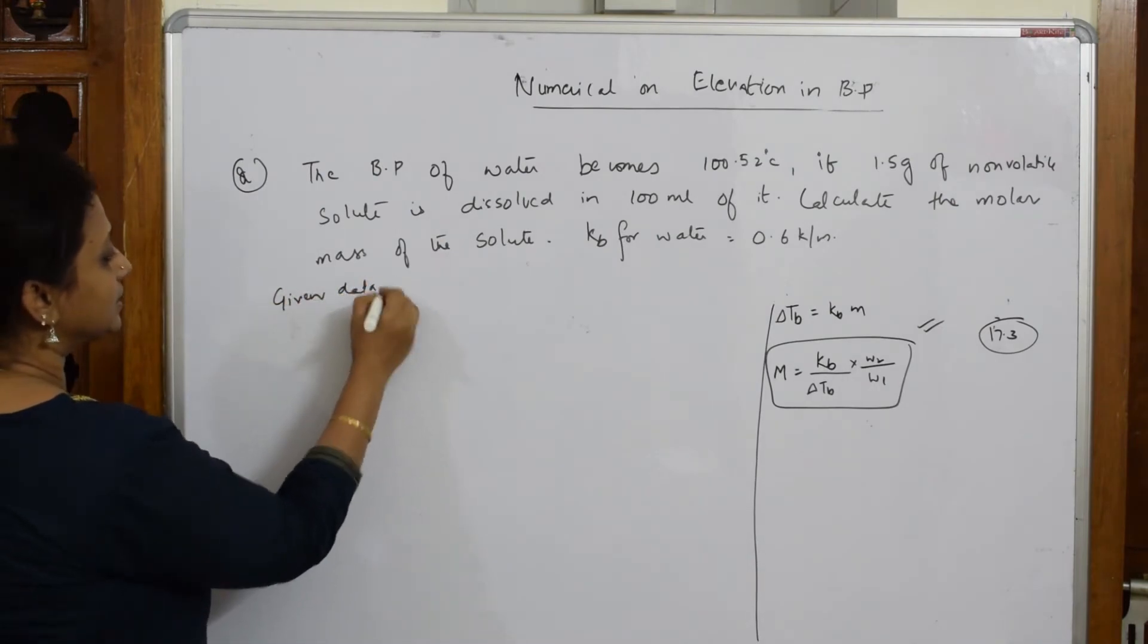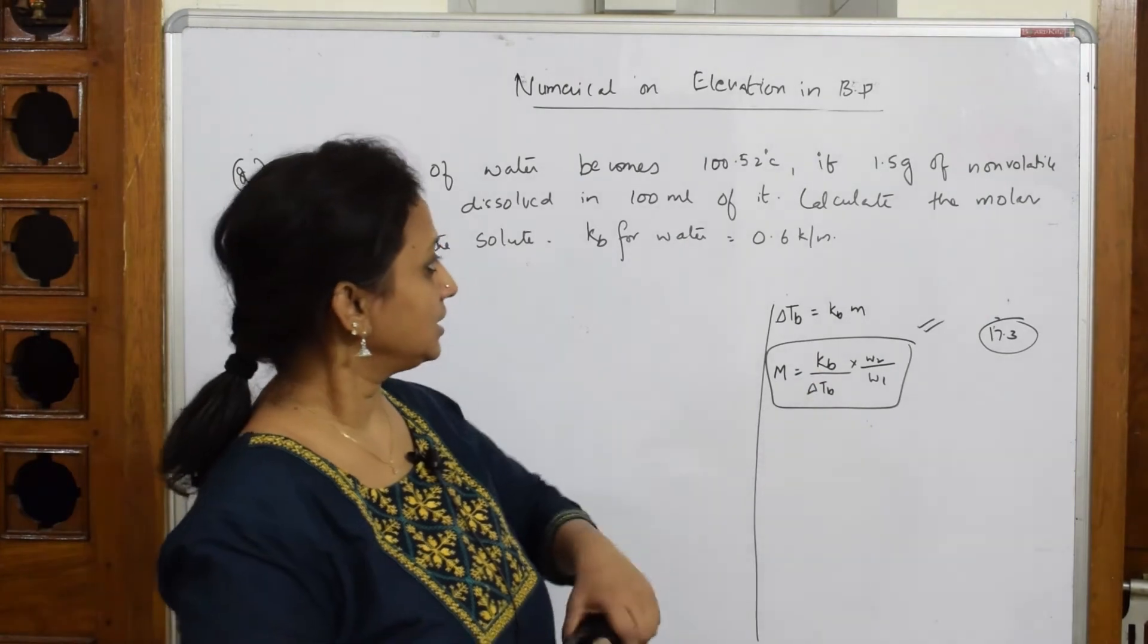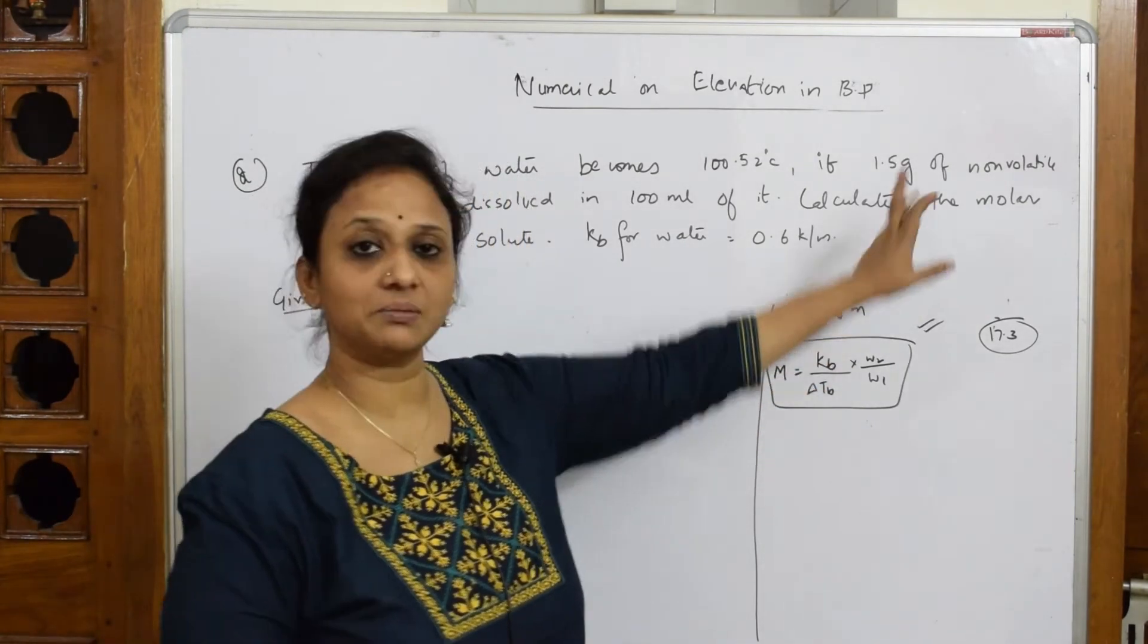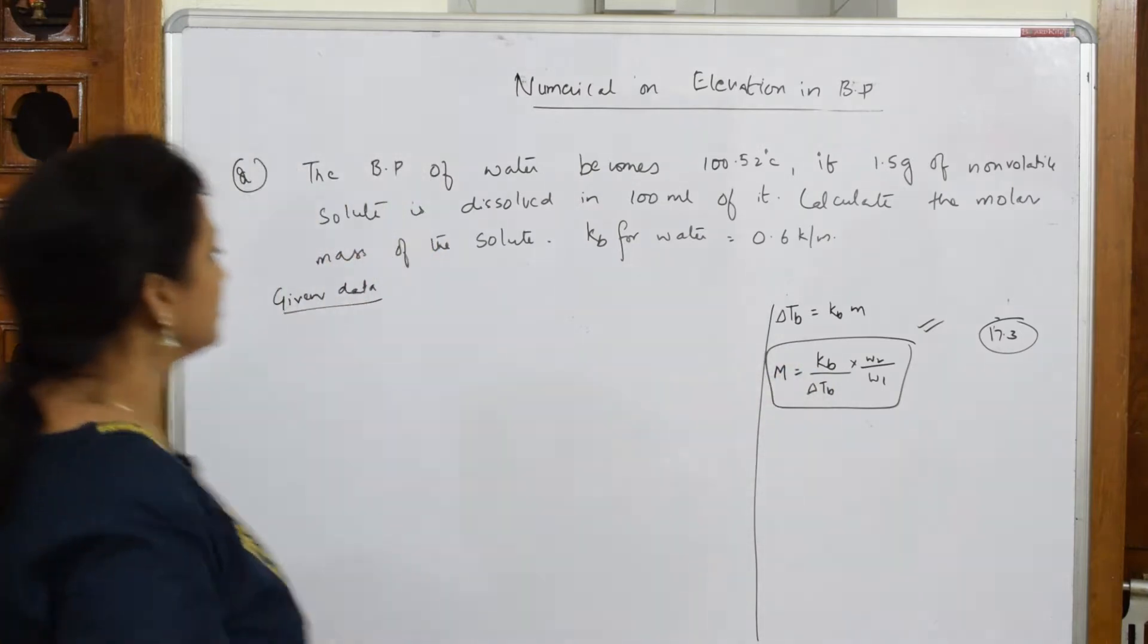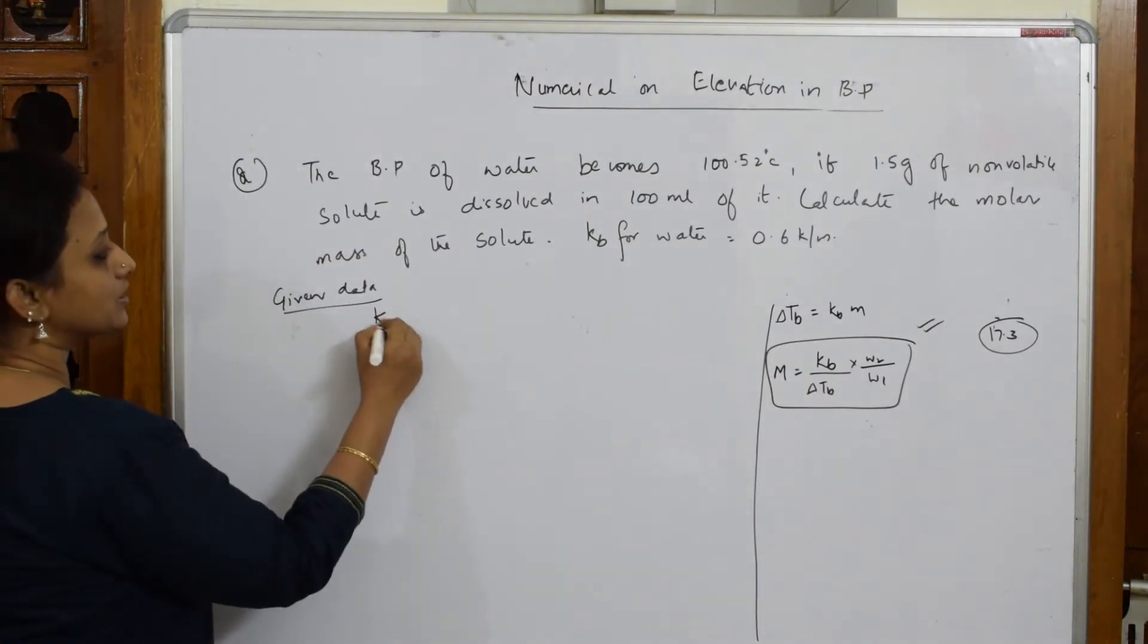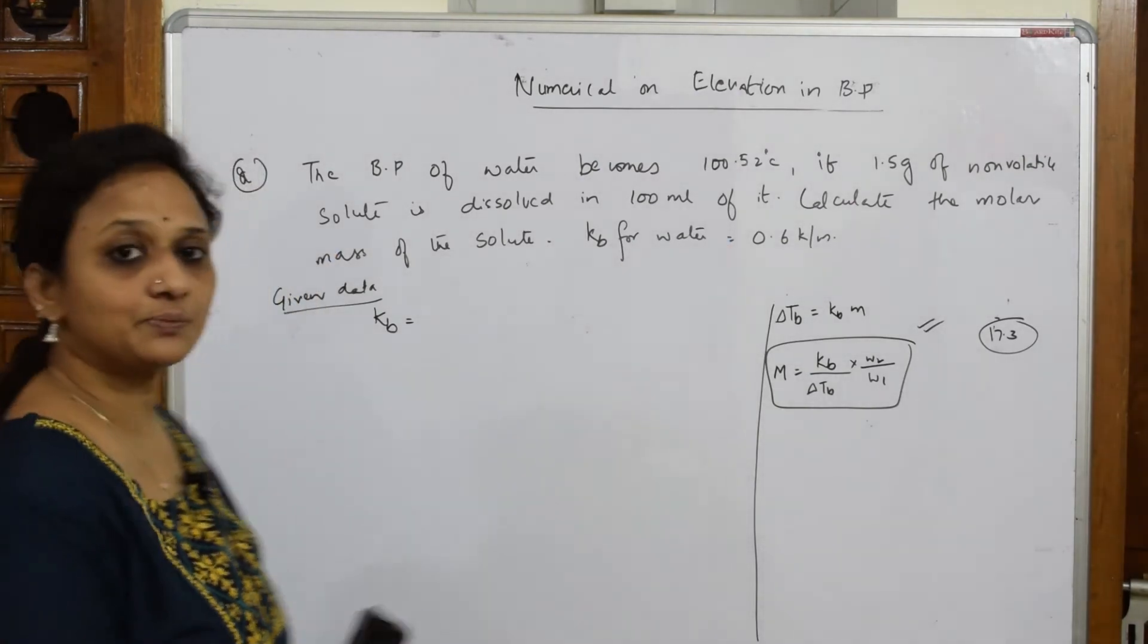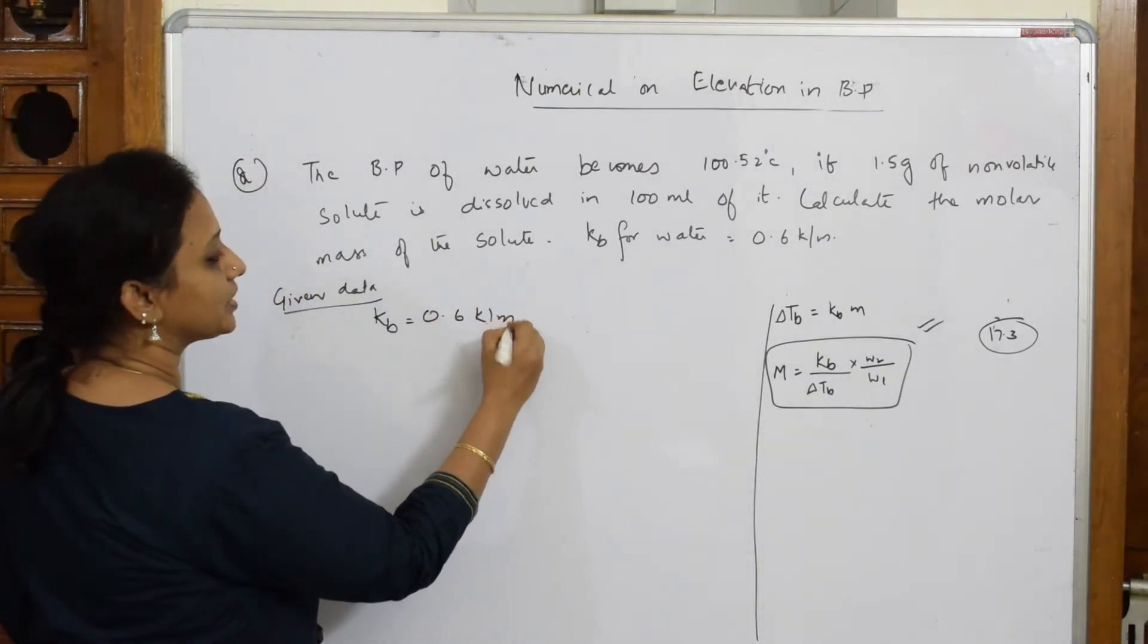Given data. First important thing let us see. Because I have asked to calculate the molar mass, both the formulas are ready. This is the formula for molar mass. Let us see what is KB here. KB, that is the ebuloscopic constant. What is given to us? They have given KB for water as 0.6 K by M.